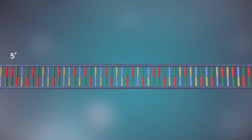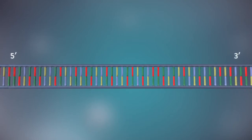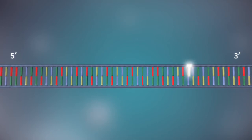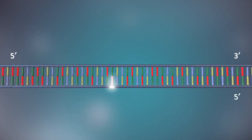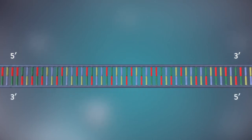Each strand has a five prime end and a three prime end. The two strands run in opposite directions. This determines how each strand of DNA is replicated.